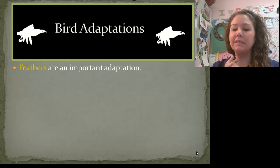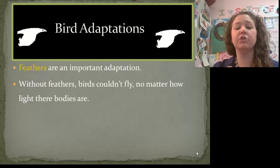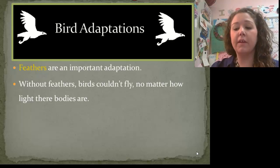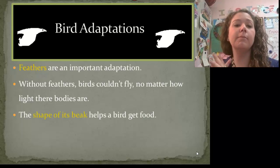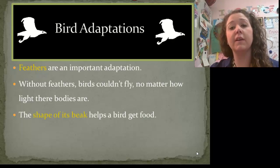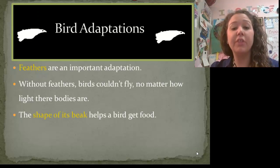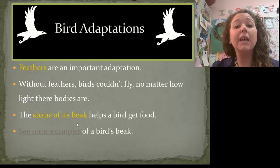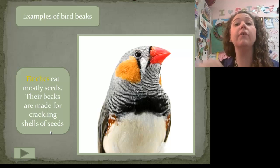Now let's look at some bird adaptations. The first adaptation is feathers — feathers are a very important adaptation. Without them, birds can't fly, no matter how light their bodies are. Write feathers in the little bubble. Another adaptation that birds have is the shape of their beak, which helps them get food. The shape of the beak determines what kind of food they can hunt and catch.